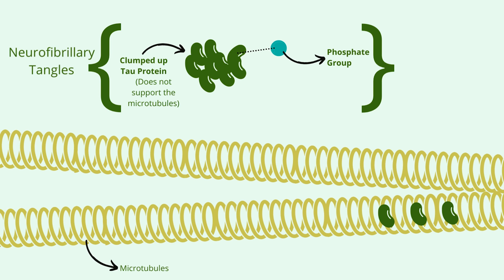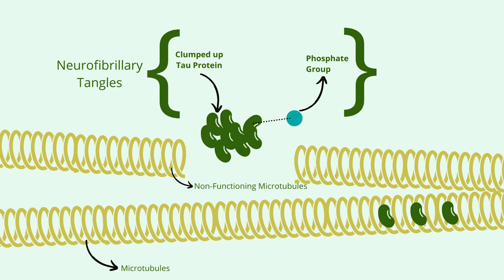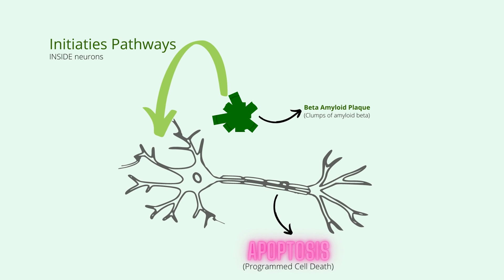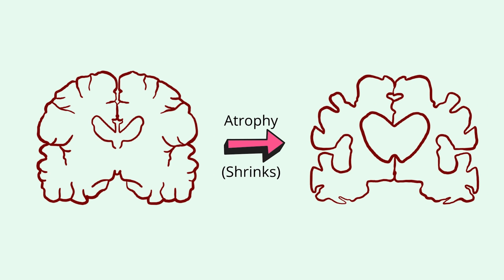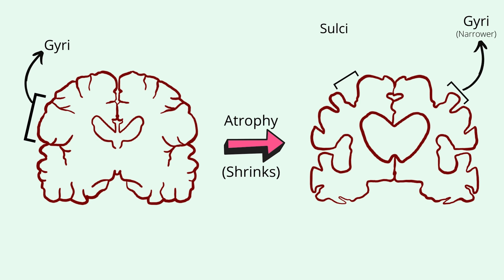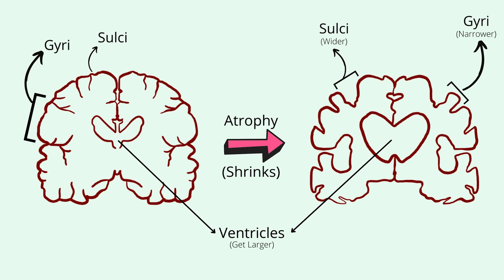Neurons with tangles and non-functioning microtubules cannot signal as well and sometimes end up undergoing apoptosis, or programmed cell death. As neurons die, visible changes start to take place in the brain. The brain begins to shrink, also known as atrophy. The gyri, which are the characteristic ridges of the brain, get narrower, and the sulci, which are the grooves between the gyri, get wider. The ventricles, which are fluid-filled cavities, also get larger with atrophy.